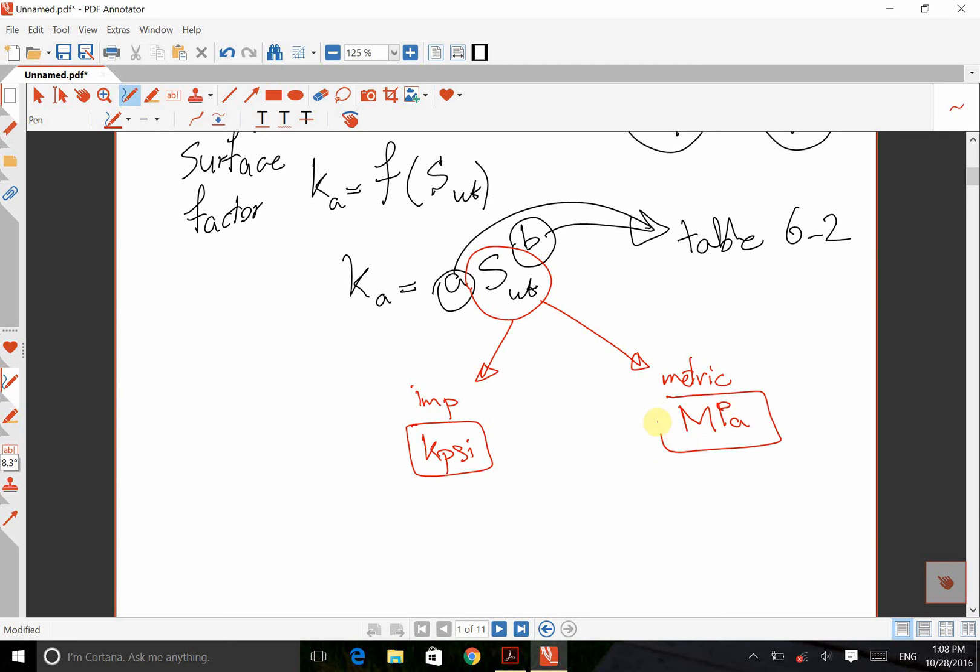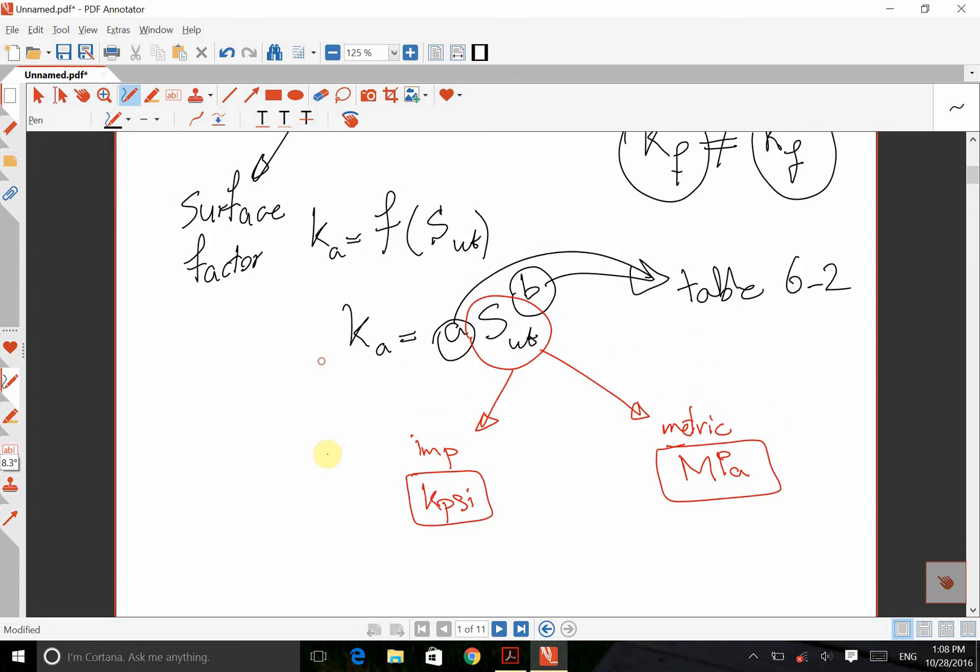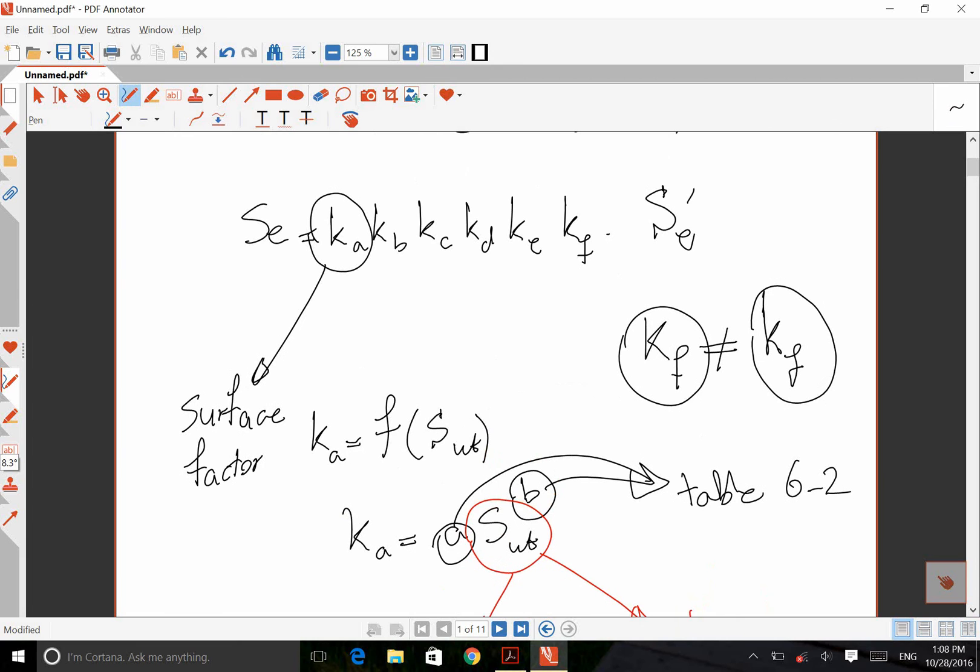And if we are working SI metric, let's say metric system, you need to use mega-Pascal. So if, for example, if your SUT is in giga-Pascal, first you need to convert that to mega-Pascal and substitute the number here in this equation, and then you can get surface factor. So that's easy. We can find that one. It's straightforward. We don't have any problem for this one.